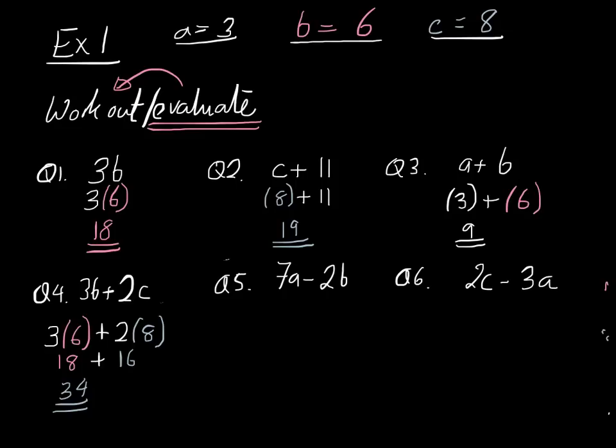Next question. 7a subtract 2b. So substitute using brackets 7 multiplied by a, but a is equal to 3. So 7 bracket 3 subtract 2 bracket 6. Now 7 multiplied by 3 is 21. And we're going to subtract 2 times 6, which is 12. And 21 subtract 12 is equal to 9. And we're done in that example.